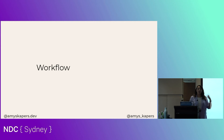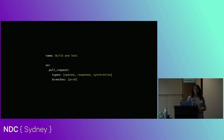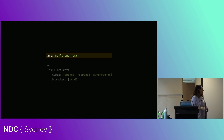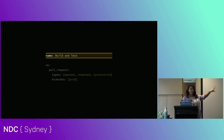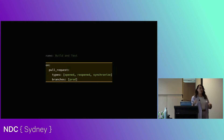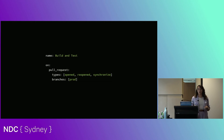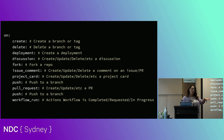A workflow is made up of jobs, and each job is then made up of a number of steps which will run one after another. Each workflow has a nice user-friendly name so you can recognize what workflow is being run, and information about how the workflow is triggered — in this case, every time a pull request is opened, reopened, or updated. These are just a few of the many trigger options available.